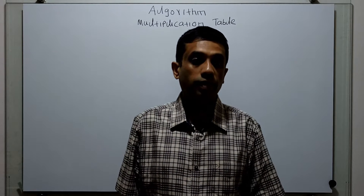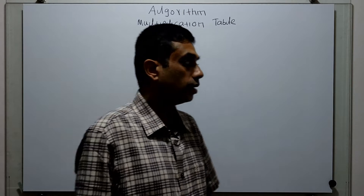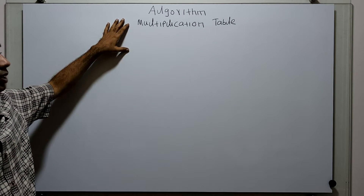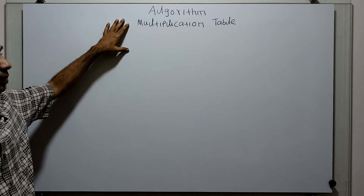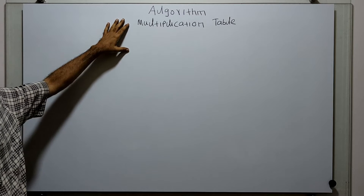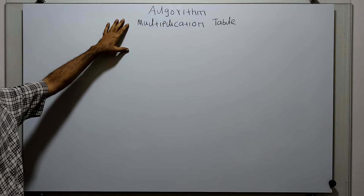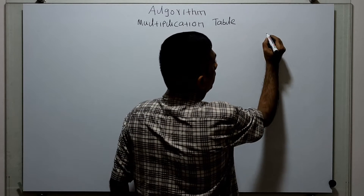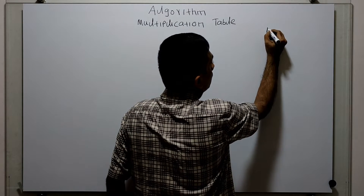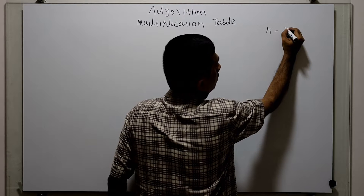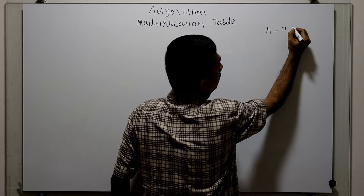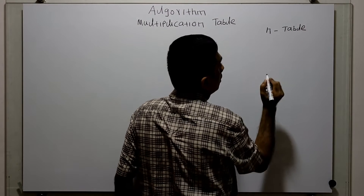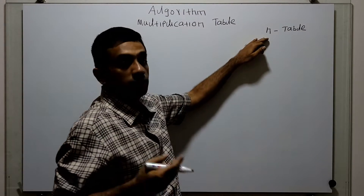Hello friends. We are going to write an algorithm to print a multiplication table. In this algorithm, I am going to use two variables. One is n — this is for the table, meaning which table we are supposed to print.